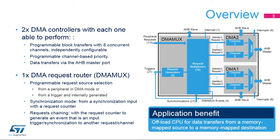The main application benefit of the DMA is to offload the CPU for data transfers from any memory-mapped source towards any memory-mapped destination.